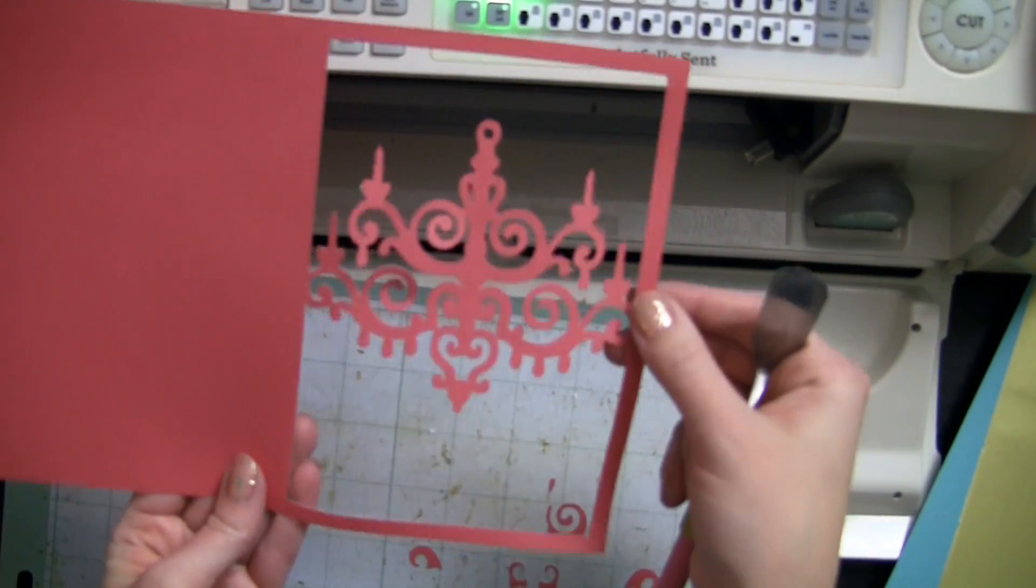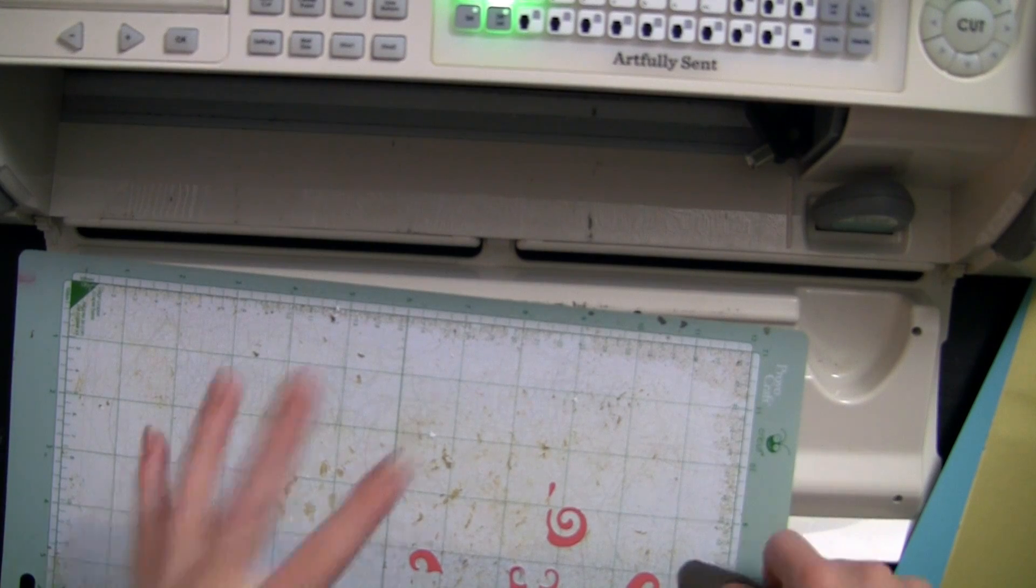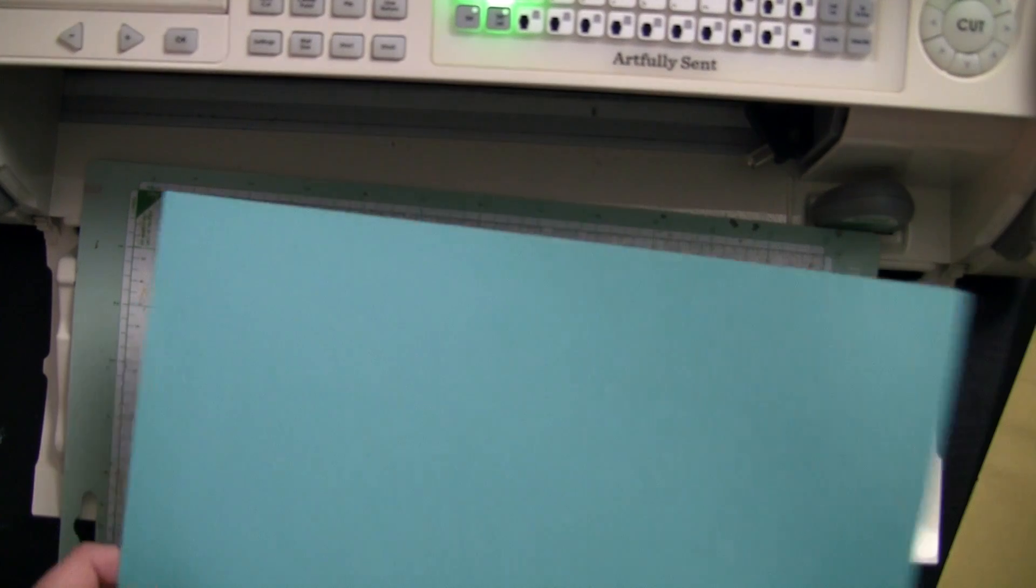And it has the little score lines in it so you know exactly where to score. So we're going to set that aside. We're going to be needing that next. We're going to cut out the envelope. I'm going to use Lagoon for that.